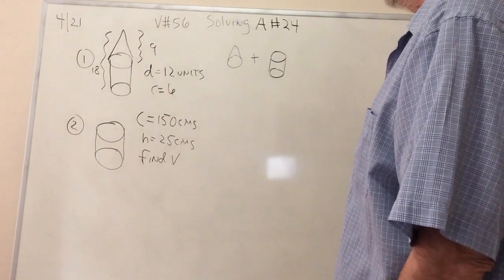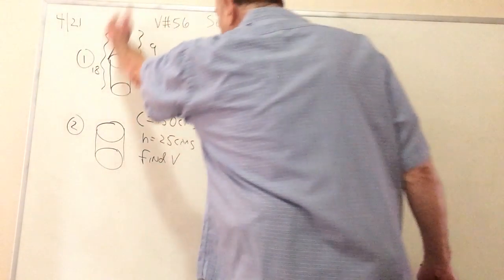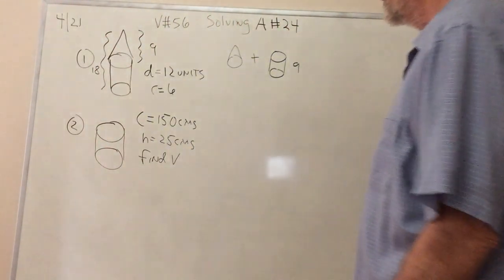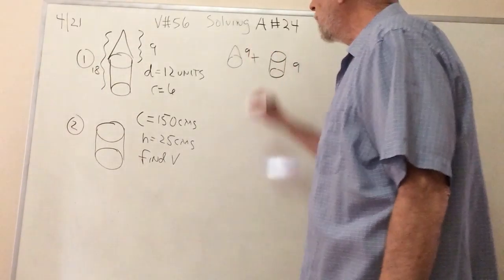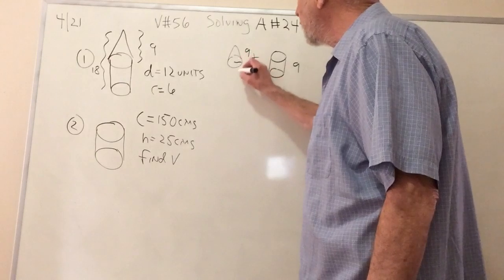So let's work the math out now. If the height of the whole thing is 18, then the height of the cylinder is 9. The height of the cone here is 9, and the radius is 6 that they share.